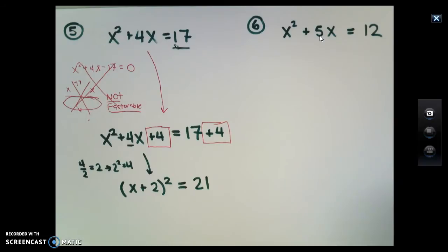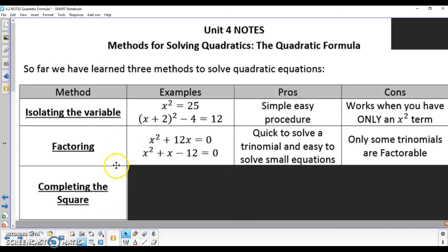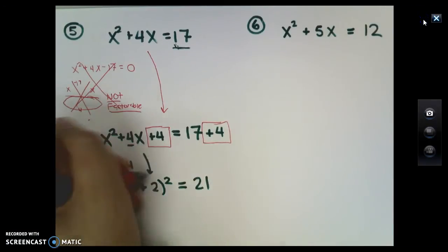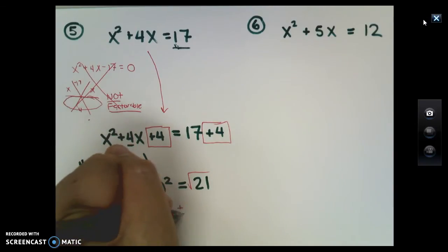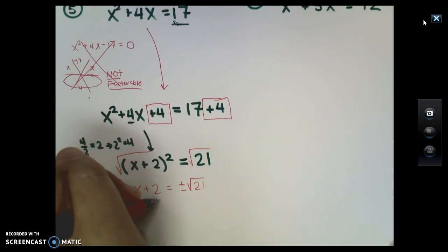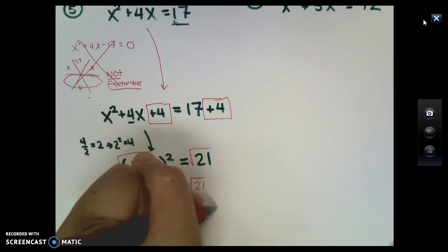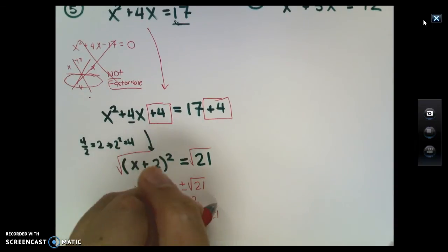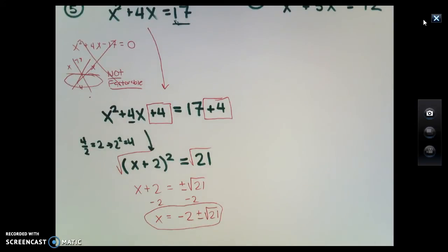Now I have something I can solve, because that looks like a classic isolating the variable type of question. I can take the square root of both sides and get x plus 2 equals plus or minus the square root of 21. I can't break down that square root of 21. Subtracting 2 from both sides, I'm just going to leave my answer as negative 2 plus or minus the square root of 21.